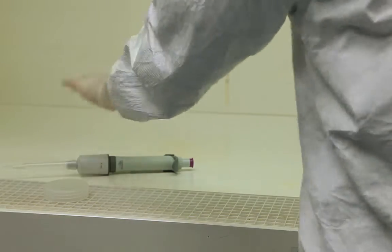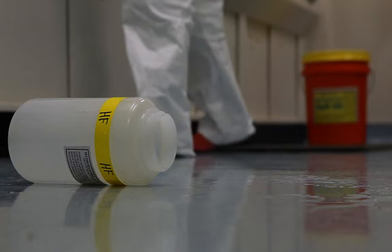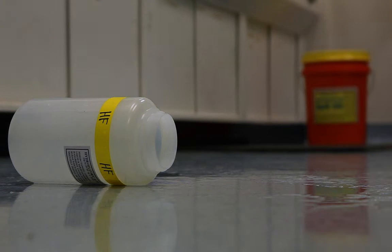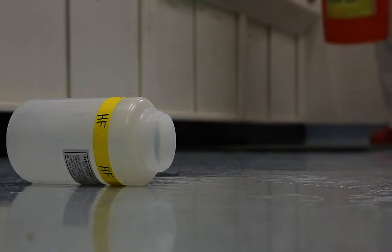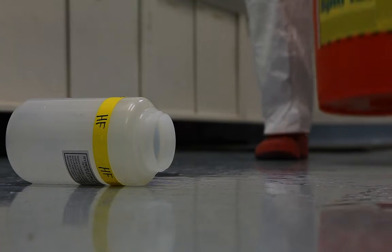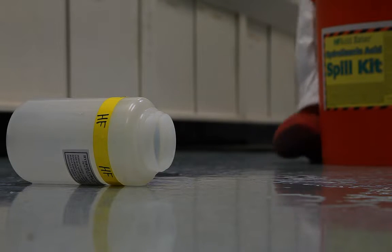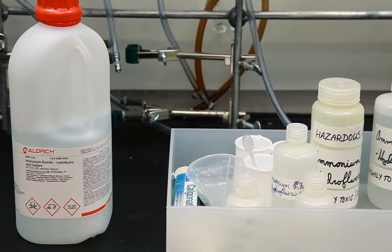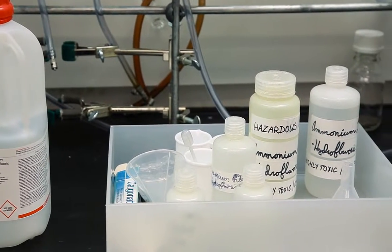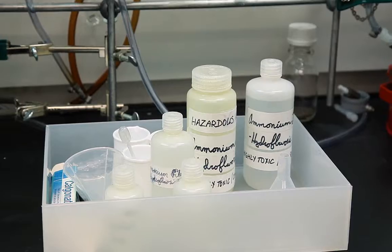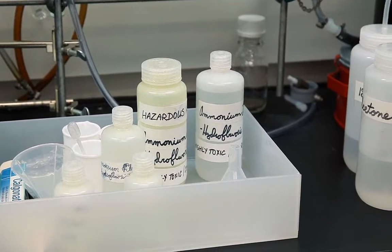HF will react with metals and metal oxides to form explosive hydrogen gas. Chemical bases, strong oxidizing agents, alcohols, amines, leather, and some types of rubber will also react with HF. Unless your lab has written procedure, contact with these materials must be avoided. Verify only compatible materials remain in your workspace.